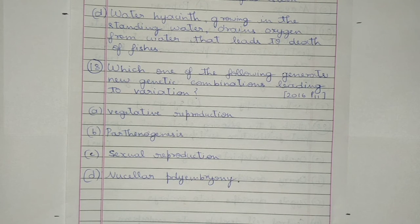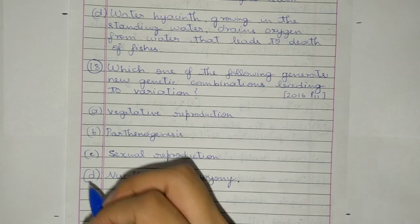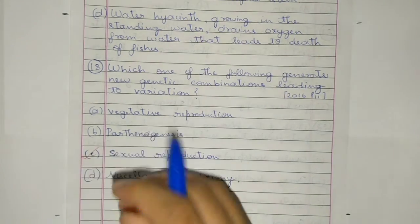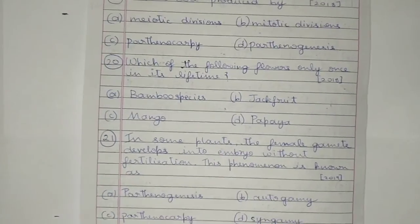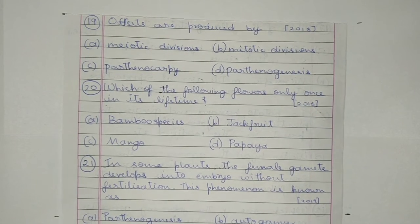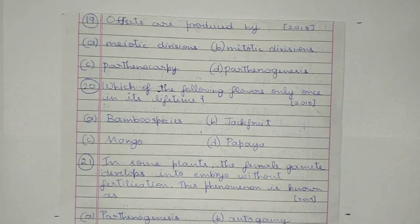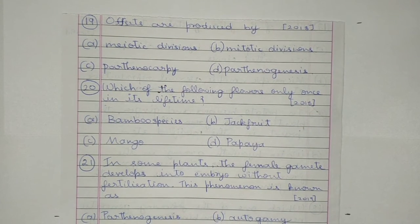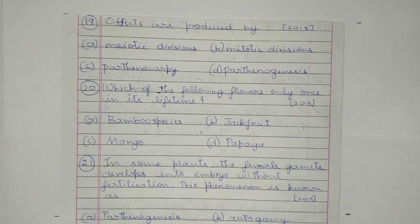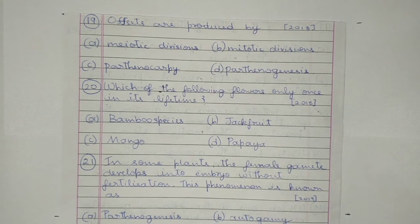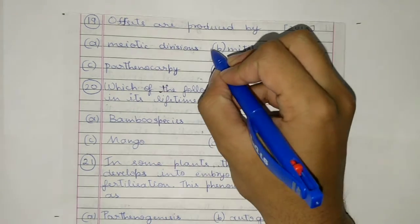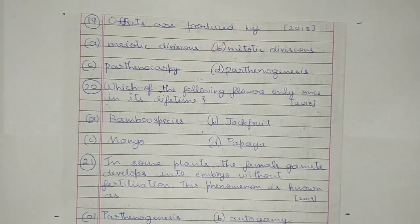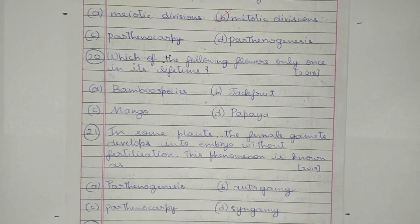Question 18. Which one of the following generates new genetic combinations leading to variation? a) Vegetative reproduction, b) parthenogenesis, c) sexual reproduction, or d) nucellar polyembryony. The answer is c. Question 19. Offsets are produced by: a) meiotic divisions, b) mitotic divisions, c) parthenocarpy, or d) parthenogenesis. The answer is b) mitotic divisions.